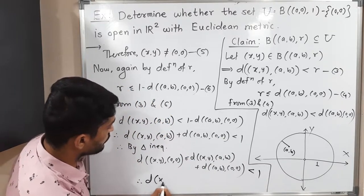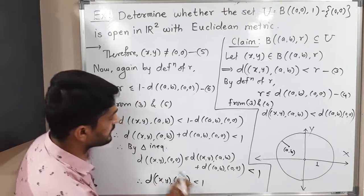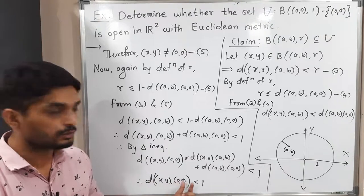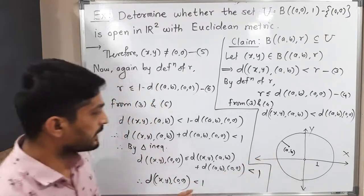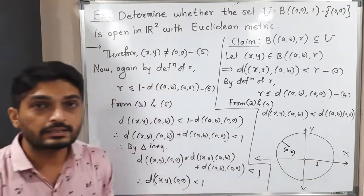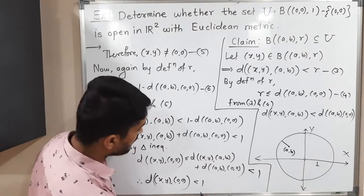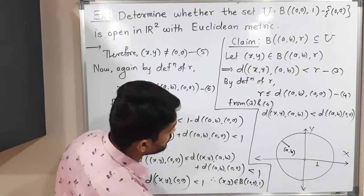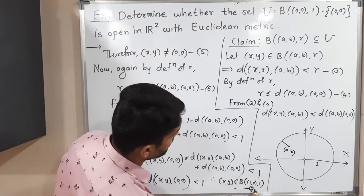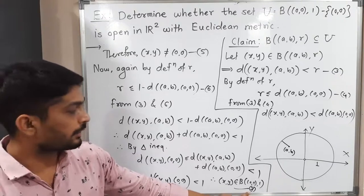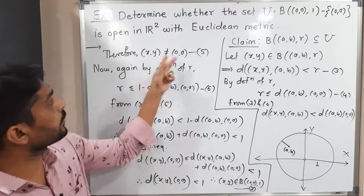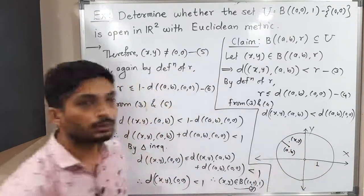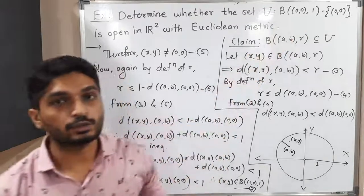Since d((X,Y),(A,B)) + d((A,B),(0,0)) < 1, and d((X,Y),(0,0)) ≤ that sum, therefore d((X,Y),(0,0)) < 1, by transitivity (A < B, B < C implies A < C). So the distance of (X,Y) from (0,0) is less than 1, meaning (X,Y) lies in the open ball with center (0,0) and radius 1 — this is equation 7. And we already proved (X,Y) ≠ (0,0), so (X,Y) satisfies the condition of U.